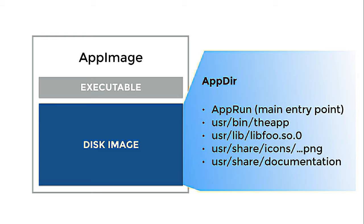So, what is an AppDir — an application directory? Well, an application directory is a filesystem tree that contains the app and all of its dependencies that we do not assume to be part of the base system. In addition, there is one file called AppRun and this is the main entry point — the executable that is executed when you run the AppImage.